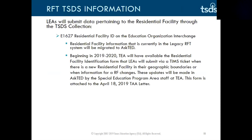LEAs will submit data pertaining to the residential facility through the TSDS collection: E16-27 residential facility ID on the education organization interchange. Residential facility information that is currently in the legacy RFT system will be migrated into ASTED. Beginning in the 2019-2020 year, TEA will have available the residential facility identification form that LEAs will submit via a TIMS ticket when there is a new residential facility in their geographic boundaries or when information for an RF changes. These updates will be made in ASTED by the special education program area staff at TEA. This form is attached to the April 18, 2019 TAA letter.